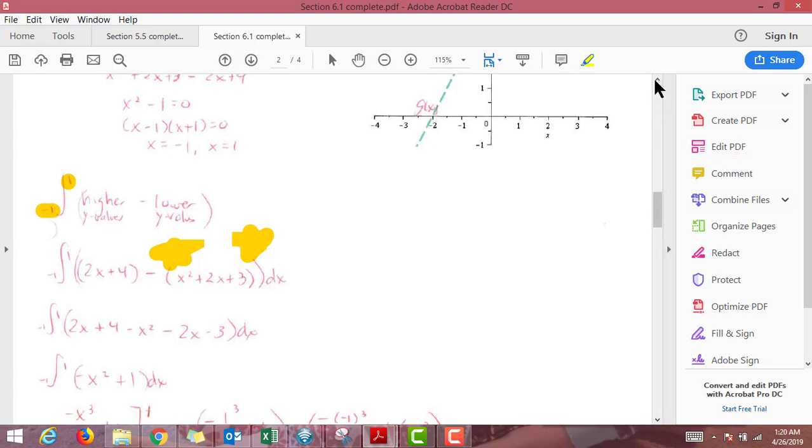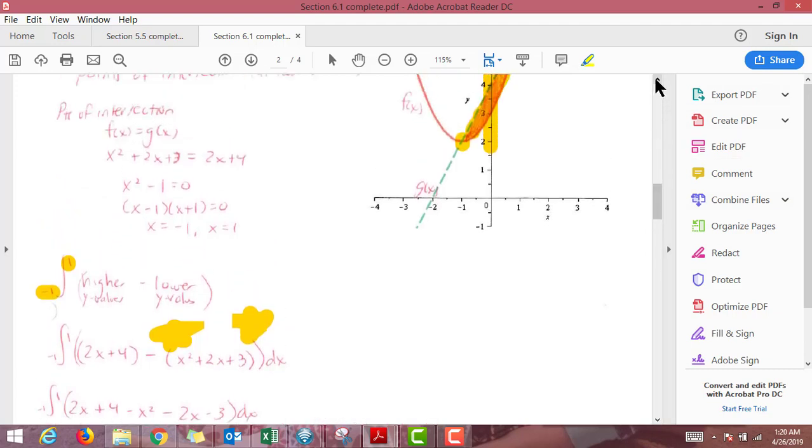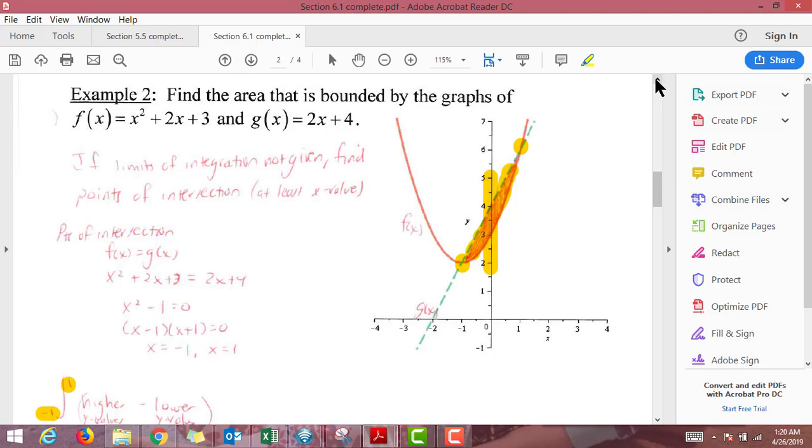All right, so in terms of just a traditional area between two curves, that's kind of as bad as it gets where you're not given your A and your B and you have to find them by finding points of intersection. And all that is is setting two functions equal to each other and solving.